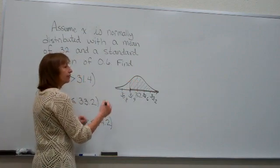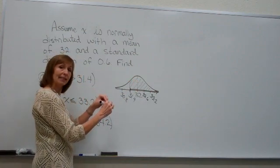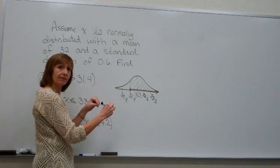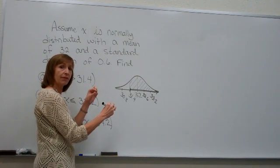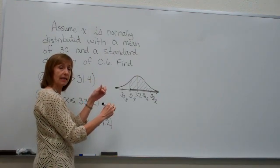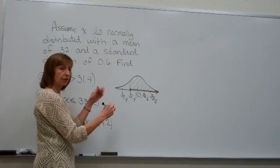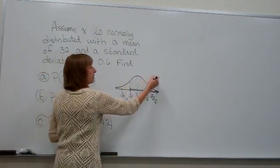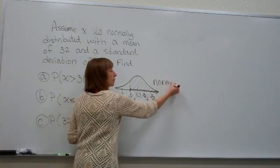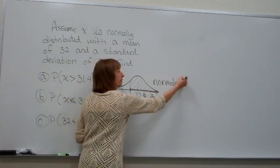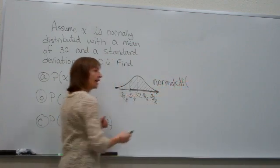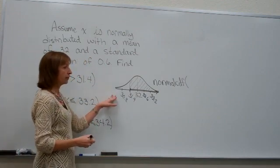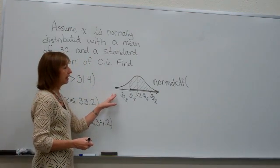In a calculator, if you look over by where the clear button is, right to the left of that is VARS. And then on the board above it is DIST for distribution. So if you go second distribution, and under that you'll see a key that's NORMALCDF.